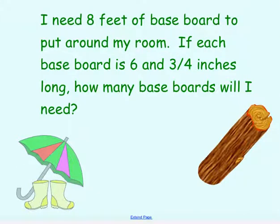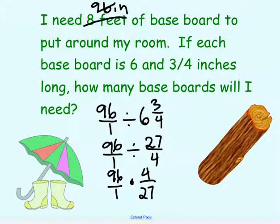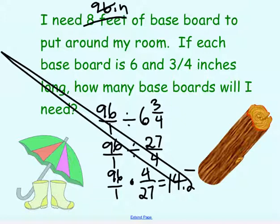One more: I need 8 feet of baseboard. If each board is 6 and 3 fourths inches, how many baseboards do I need? Convert 8 feet to 96 inches. Then ask: how many 6 and 3 fourths go into 96? That's 96 divided by 6 and 3 fourths, or 96 over 1 divided by 27 over 4. Copy, dot, flip: 96 over 1 times 4 over 27. So 96 times 4 divided by 27 gives 14.2 repeating. Since you can't buy a partial baseboard, I need 15 baseboards.